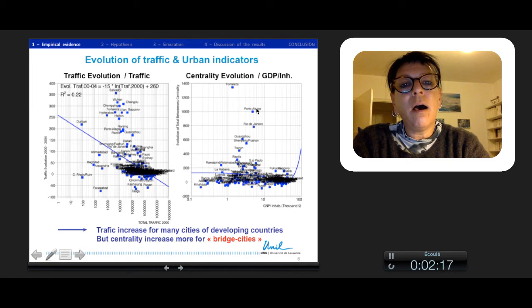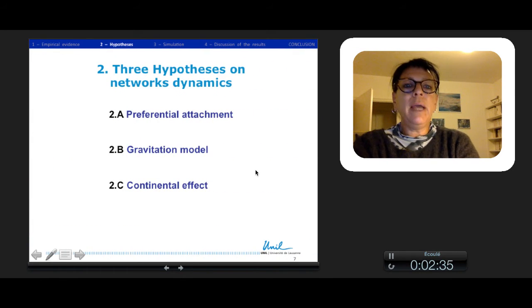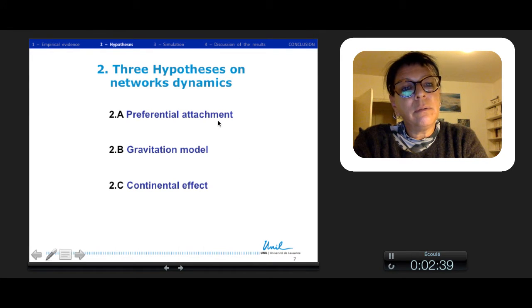But the cities who developed their centrality are mostly bridge cities situated in these BRICS or new emerging countries. We made three hypotheses on the network dynamic: first, a dynamic of preferential attachment, then a gravitation model or continental effect.